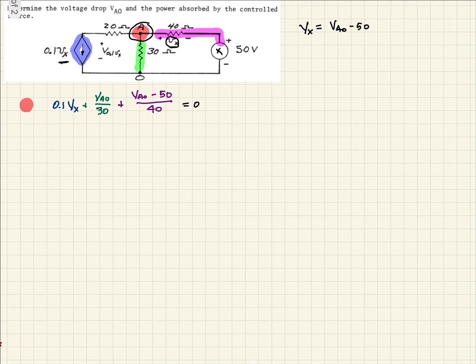So now we should be able to take that value, or that expression, and plug it in to where we have Vx, which is right here. So then we can rewrite that then as 0.1 times VA0 minus 50 plus 1 over 30 times VA0 plus 1 over 40 times VA0 minus 50 equals to 0.